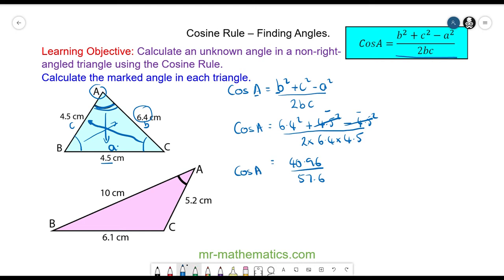Now because we want to work out A and not the cosine of angle A we need to take the arc cos of both sides. So this will then cancel. So we have angle A will equal to the arc cos of 40.96 divided by 57.6. So angle A will be 44.7 degrees to one decimal place.